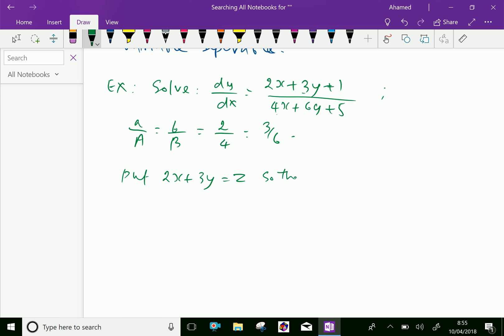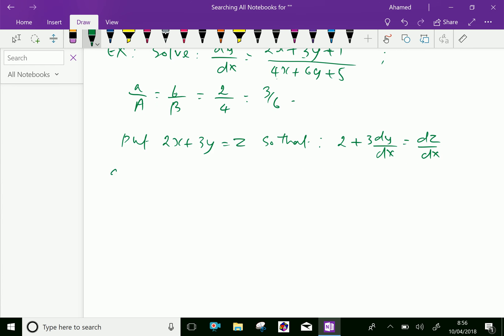By differentiating with respect to x, we have 2 + 3(dy/dx) equals dz/dx. And we can see 1/3, therefore dy/dx equals (1/3)(dz/dx) - 2/3.